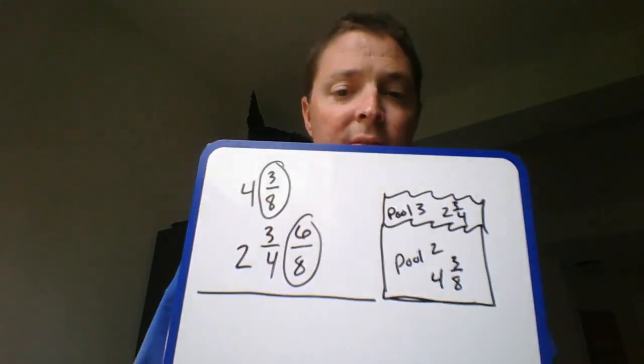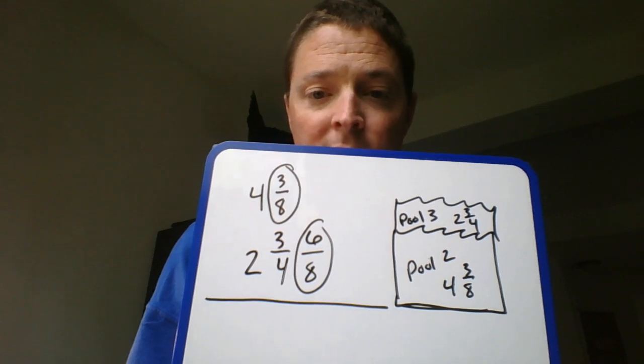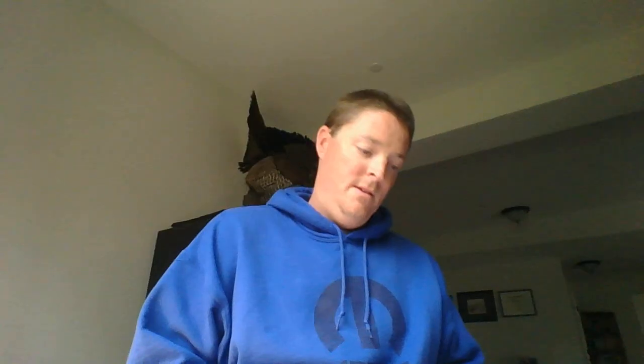Circle the two fractions that have the common denominators. So I'm going to add four and two for my whole numbers, and then I'm going to add three and six, nine-eighths for my numerators. Let's see here. I'm going to get six and nine-eighths.